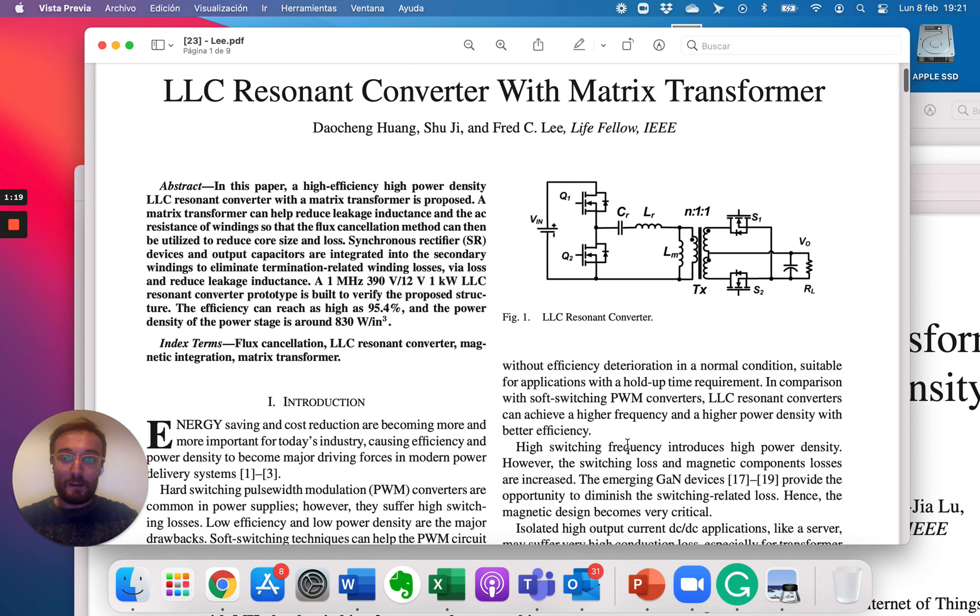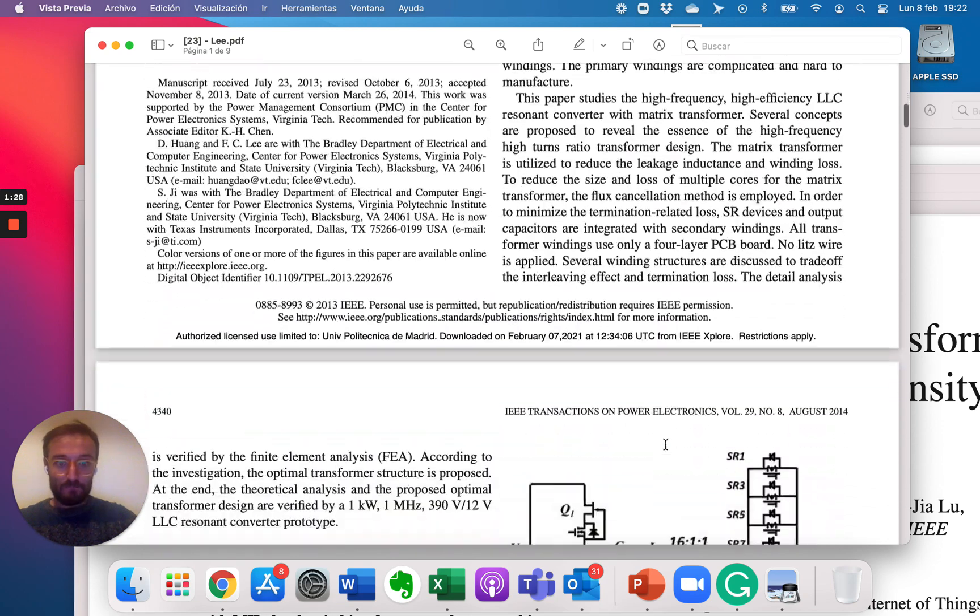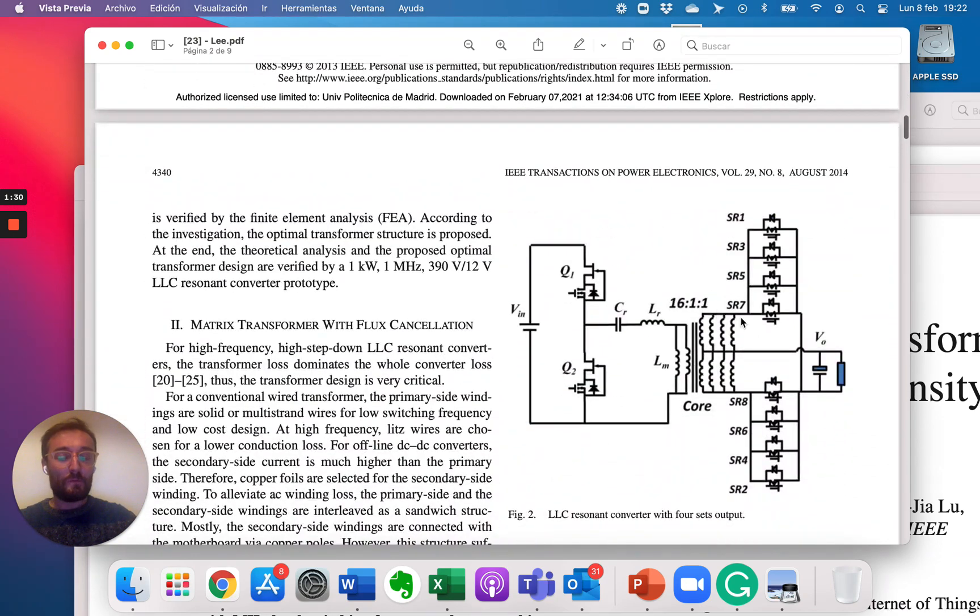But in the first work that Professor Fred Lee and his students published, they analyzed the problem of trying to have a lot of switches in parallel to reduce the conduction losses in the secondary side of the 12 volts, that is a very low output voltage, but there is a lot of current.